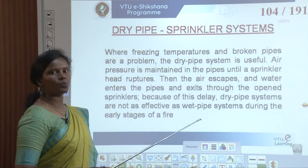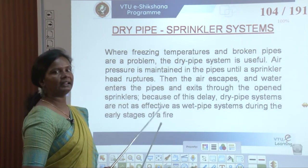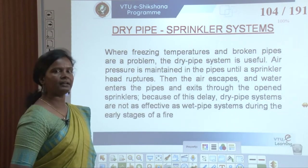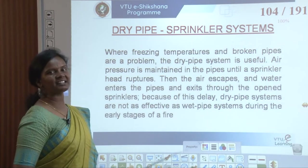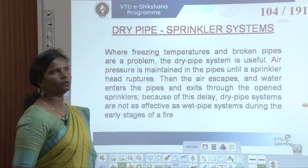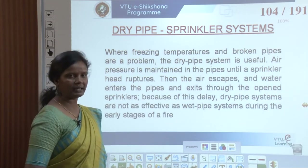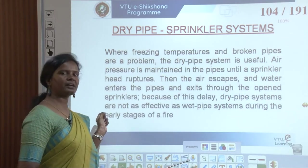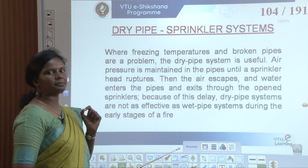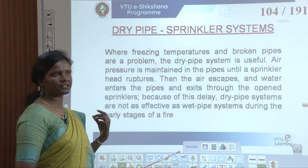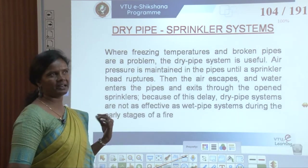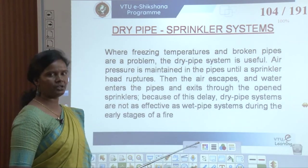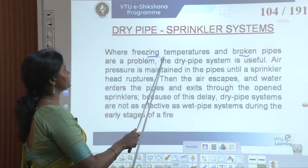In the wet pipe system, water is continuously present in the pipes. In dry pipe systems, water is not continuously present — this is used in different contexts, such as where freezing temperatures and broken pipes are a problem. In cold climates, water in the pipes can freeze, so dry pipe sprinkler systems are used where freezing temperatures are high or there is a risk of pipes breaking.